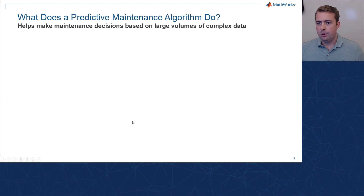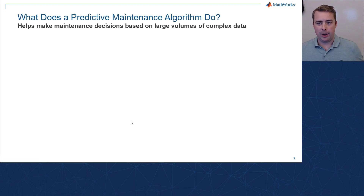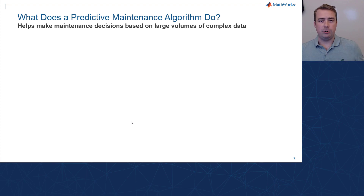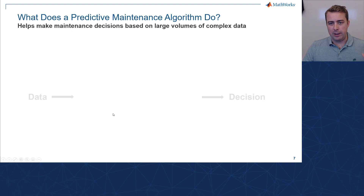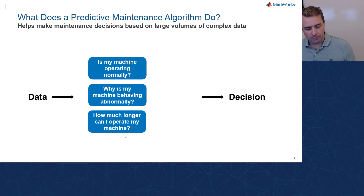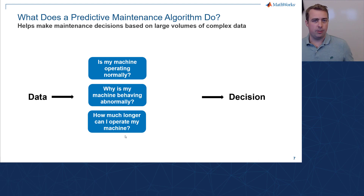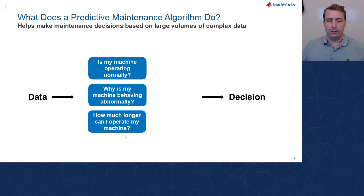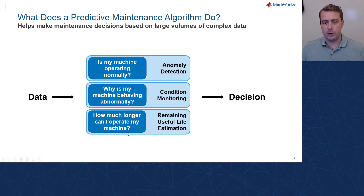Before we get into the example, I want to step back and cover what a predictive maintenance algorithm is doing. We're making more intelligent decisions with data, and between the two endpoints we're looking at three distinct questions: Is the machine operating normally? If not, what is wrong with it? And third, how much longer can I expect the machine to operate? These tasks are defined as anomaly detection, condition monitoring, and remaining useful life estimation.